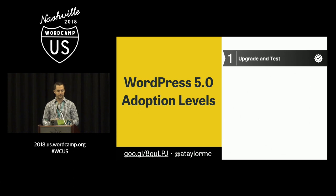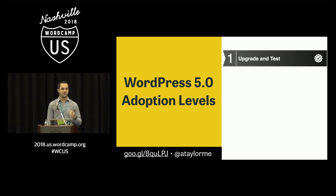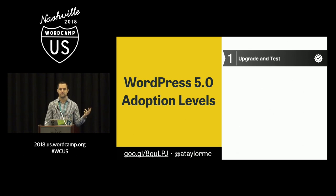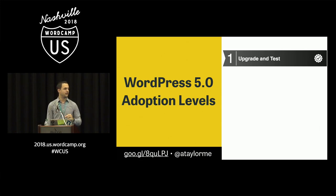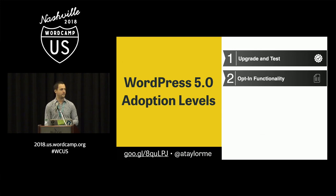Well, you actually don't. I broke down these levels of progression. The first one is just upgrade and test — just adopt 5.0 at all. Maybe the new editor doesn't make sense for a legacy project that's not in development anymore, and you install the classic editor. That's fine. That's still adopting WordPress 5.0.